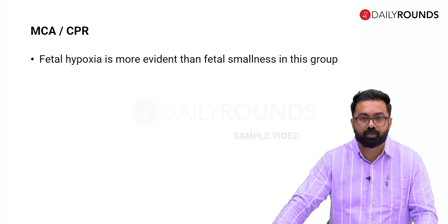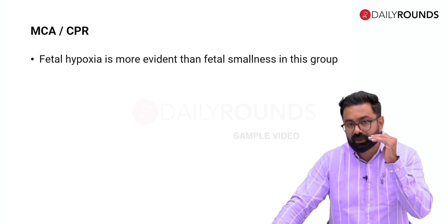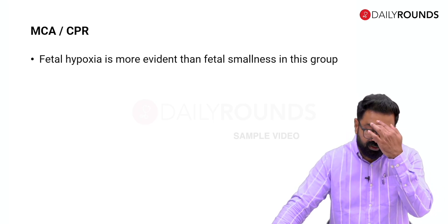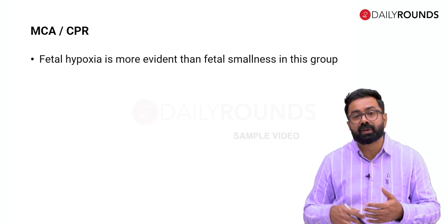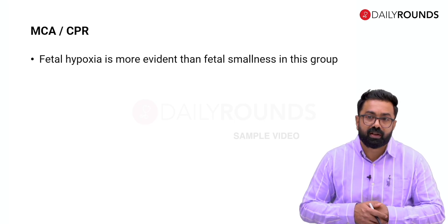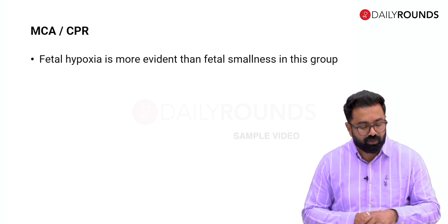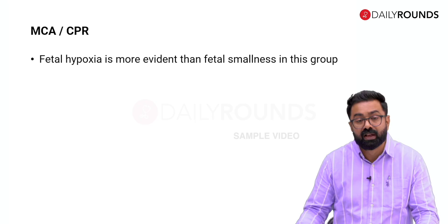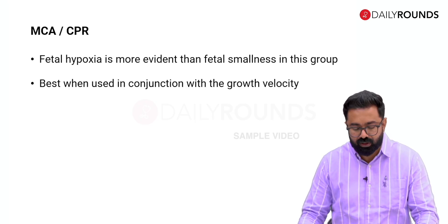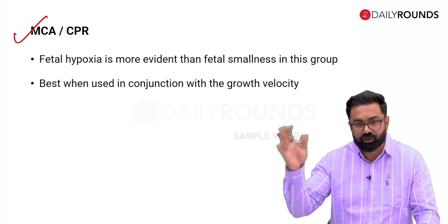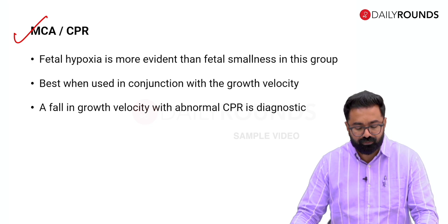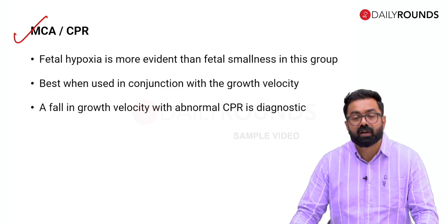Smallness will not be a criteria here — the baby might be appropriately growing, showing a fall in centiles but still within the 10th centile range. In these late onset cases, the baby's higher oxygen demands mean that even slight hypoxia produces significant consequences. Therefore, you would use Doppler — especially MCA and CPR changes — in conjunction with the growth trajectory plotted on the growth chart. Fall in growth velocity with an abnormal CPR would be your diagnostic criteria for FGR in AGA.